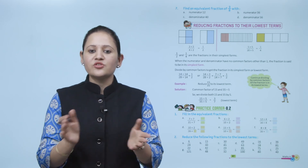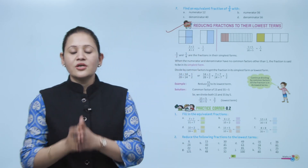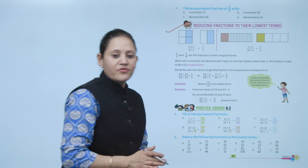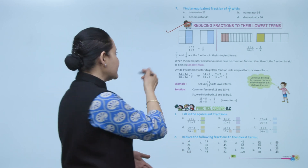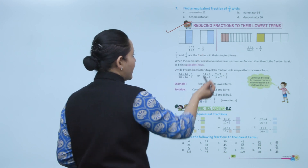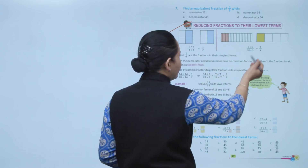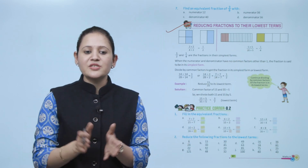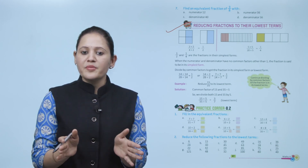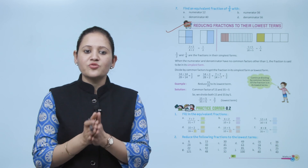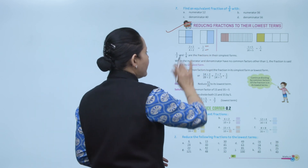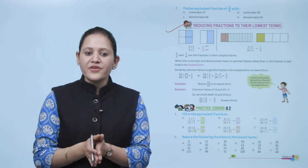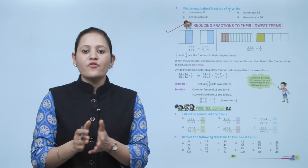Next is reducing fractions to their lowest term. For 2 upon 4, divide both numerator and denominator by their HCF — dividing by 2 gives 1 by 2. Divide both by 5 to get 1 by 4. Here 1 by 2 and 1 by 4 are fractions in their simplest form. When the numerator and denominator have no common factor other than 1, the fraction is in its simplest form.